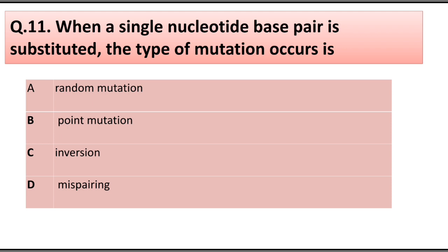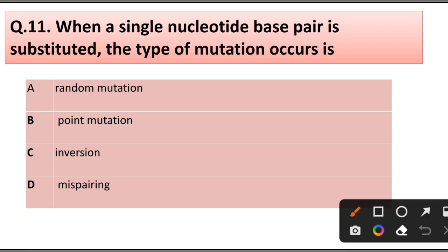Question number 11. When a single nucleotide base pair is substituted, the type of mutation that occurs is: random mutation, point mutation, inversion, or mispairing. Answer is option B: Point mutation.